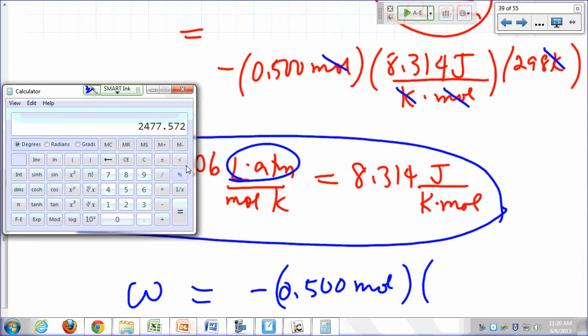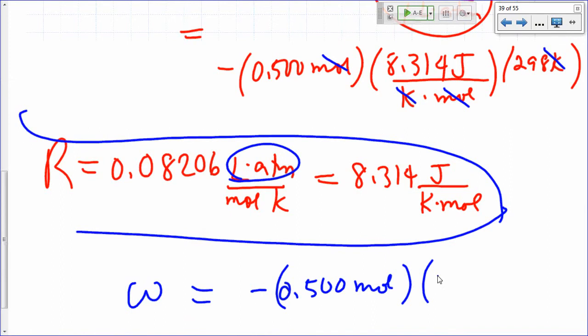So 2.477 joules, 2477 joules. Oh, there's no units have cancelled out, right? So 2477, oh yeah, it's joules.